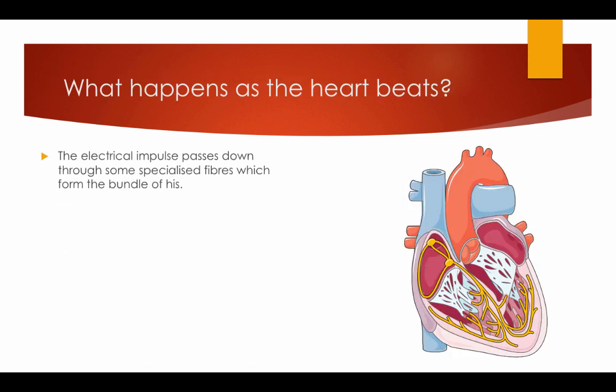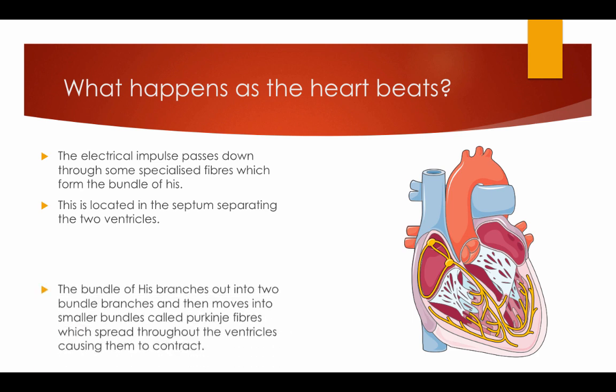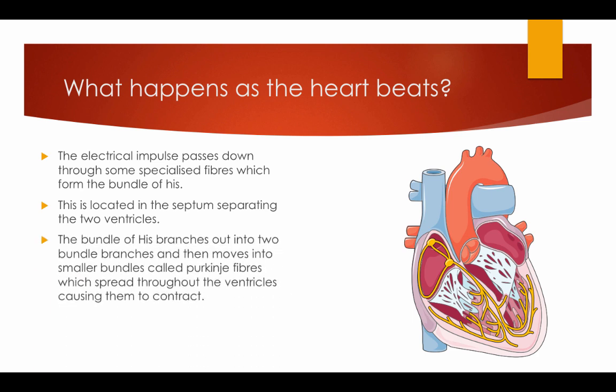The electrical impulse is passed down through specialised fibres known as the bundle of His, located in the septum separating the two ventricles. The bundle of His branches out into two bundle branches and then moves into small bundles called Purkinje fibres, which spread throughout the ventricles causing them to contract.